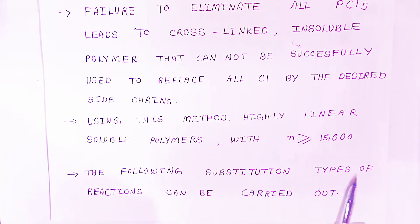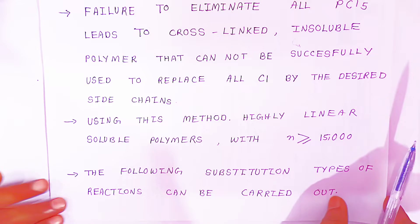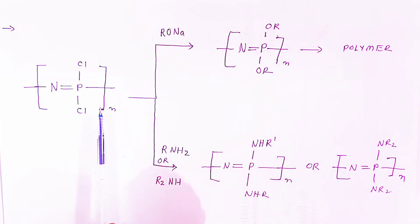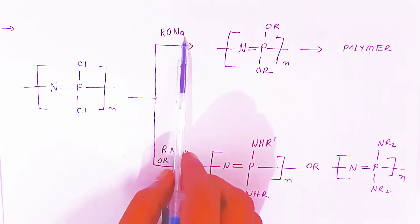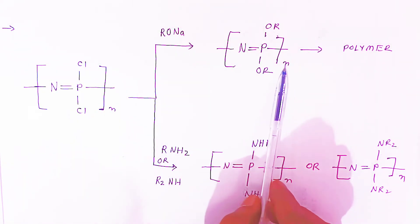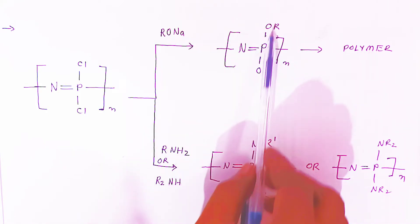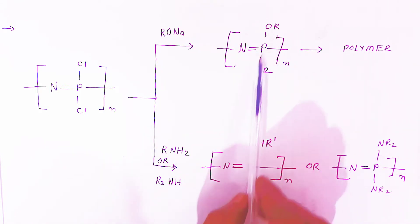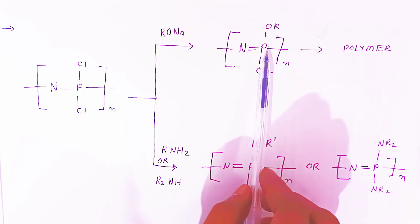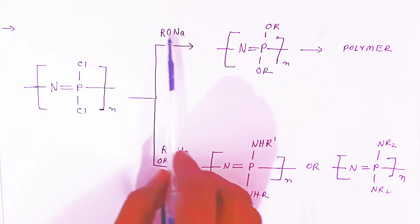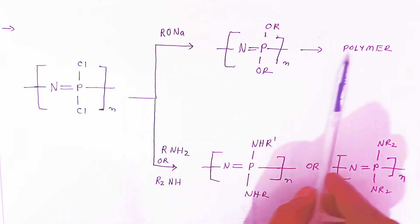The following substitution type of reactions can be carried out. If you have n number of polyphosphorgens and you add sodium alkoxide, you are getting n number of polymers. Two alkoxide groups will be arranged accordingly. Phosphorus is in the +5 oxidation state and nitrogen is in the +3 oxidation state. So this alkoxy group will attach to the phosphorus and you are getting polymers.